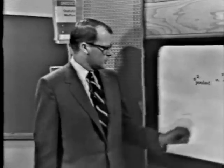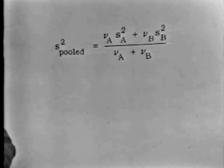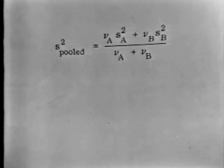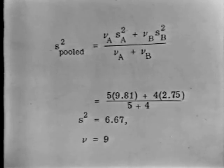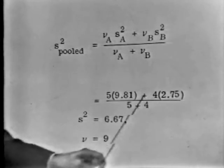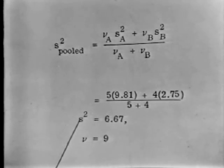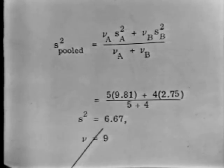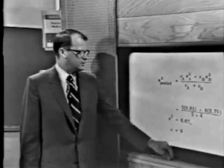In our particular problem, we have s²_A and s²_B and we want to combine them into a single pooled estimate. The pooled estimate of the variance is the weighted average of the two s squares, weighted by their degrees of freedom. With five degrees of freedom for the first and four for the second — a total of nine degrees of freedom — and values of 9.81 and 2.75 respectively, our pooled estimate of the variance turns out to be 6.67 based on nine degrees of freedom.